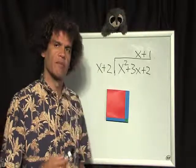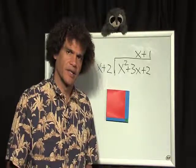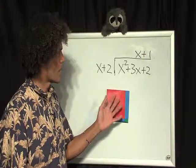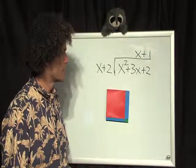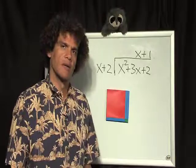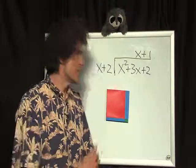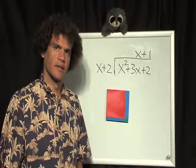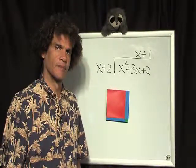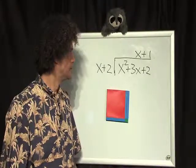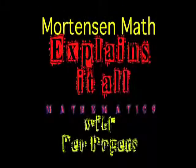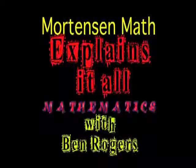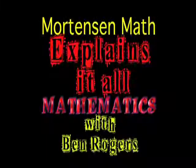We could spend much more time with explanation on why this works and how it mirrors the symbols. But I think you can see that any young child can do this. Ben Rogers has got it going on. Ben Rogers explains it all with Mortensen math. If you want straight A's, Ben's got it going on. Ben explains it all.